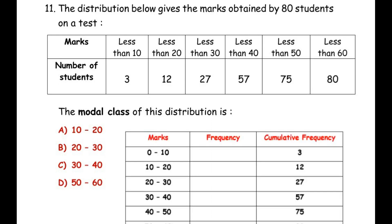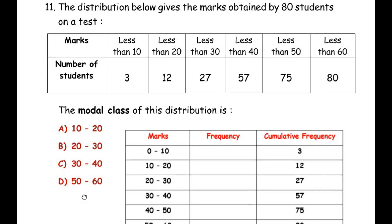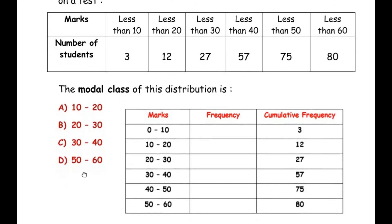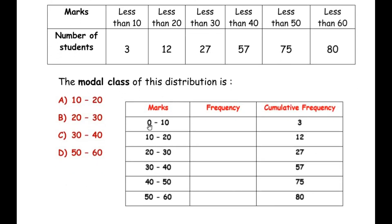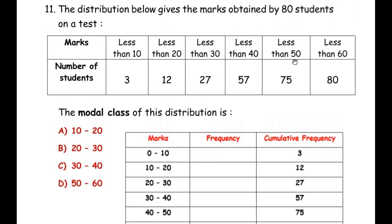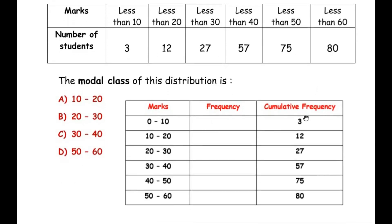So let me draw a table here. So here the marks I have changed from less than type to a class interval that is less than 10 you can see I have written as 0 to 10, less than 20 is 10 to 20, less than 30 is 20 to 30 and so on till the last one that is 50 to 60. And instead of writing number of students we know that this is a cumulative frequency because they are getting added to give you the total number of students as 80 at the end. So here I have written cumulative frequency as 3, 12, 27 and so on till 80.